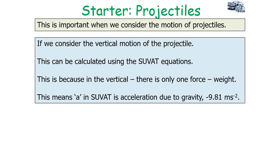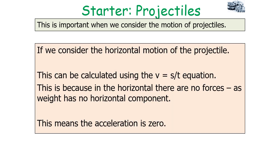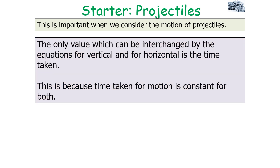The vertical motion of a projectile is calculated using the SUVAT equations of motion, because in the vertical direction there is only one force — weight — so the acceleration a in the SUVAT equations equals the acceleration due to gravity, −9.81 m/s². The horizontal motion is calculated using the equation velocity = displacement ÷ time, because in the horizontal direction there are no forces and therefore no acceleration. The only value that can be interchanged between the vertical and horizontal equations is the time taken, since the time of motion is the same for both.